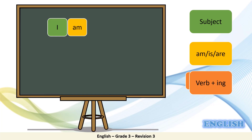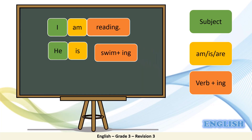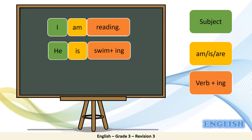Then we need an action verb with an -ing. For example, read — reading. Let's have another example: subject he, helping 'to be' verb is, and a verb — swimming. Most verbs take -ing in forming it, as in read/reading. But verbs ending in one vowel and one consonant double the consonant before the -ing, as in swimming.